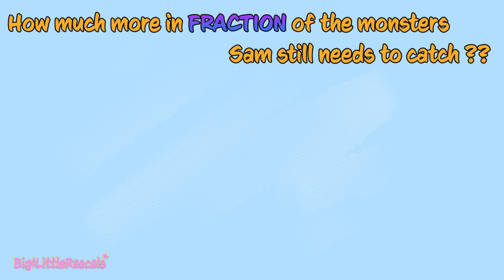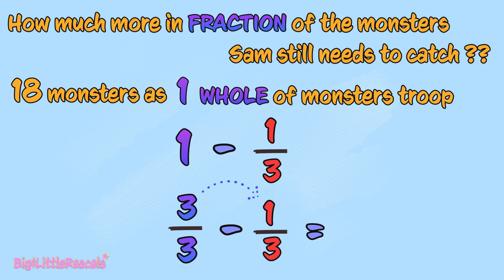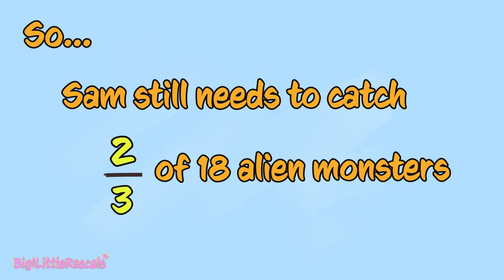And how much more in fraction Sam still needs to catch? Sam has caught one-third of 18 alien monsters. Let's put total 18 alien monsters as one whole lot. So, one minus one-third. First, let's change one to fraction form. 3 out of 3, because 3 divided by 3 equals to 1. But why we use number 3? So, it matches with one-third. The bottom number is the same, so we can subtract the fraction easily. 3 out of 3 minus 1 out of 3. First, 3 minus 1, it gives us 2. And the bottom number 3 follows here. So, Sam still needs to catch two-thirds of 18 alien monsters in order to save the Earth.